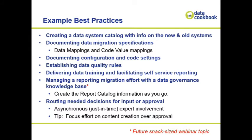Creating a data system catalog with info on the new and old systems — making sure that you've got that information in a centralized, viewable, documentable place so you can see what's in these systems. Documented data migration specifics, so the data mappings and code value mappings between those two systems. Having that catalog information there and adding that lineage data migration mapping and the code value mappings between the systems are really important.